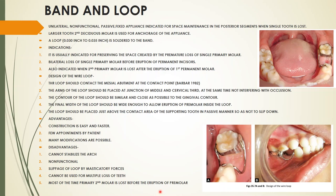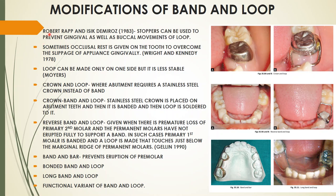Advantages of band and loop: construction is easy, few appointments are required, and many modifications are possible. Disadvantages: it cannot stabilize the arch as it is unilateral and non-functional; there can be slippage of the loop due to masticatory forces; and in many cases the second molar is lost before eruption of the premolar, limiting use of the second molar as anchorage.